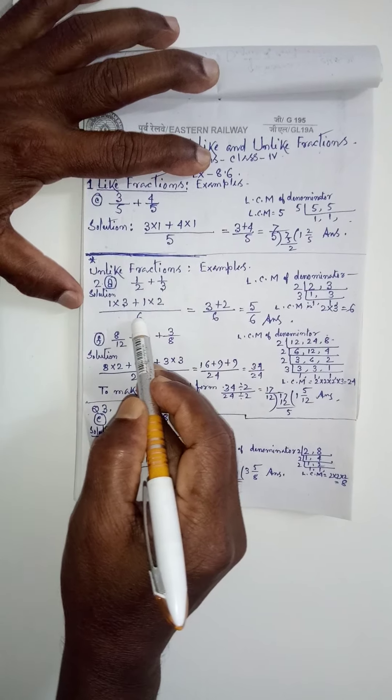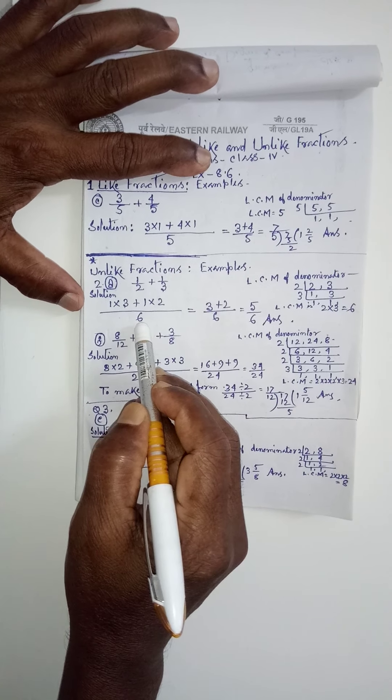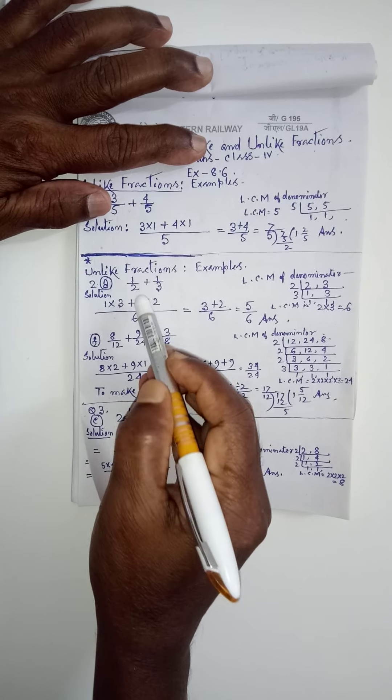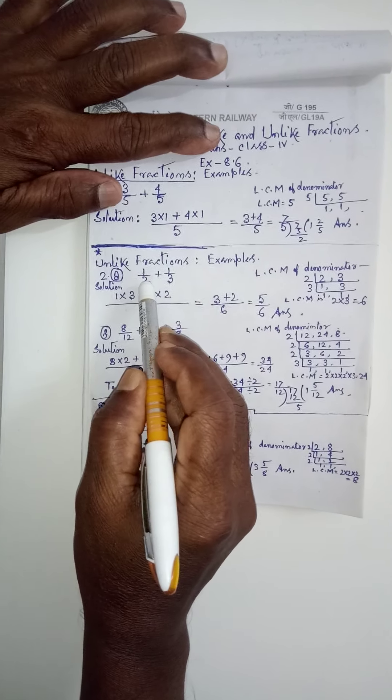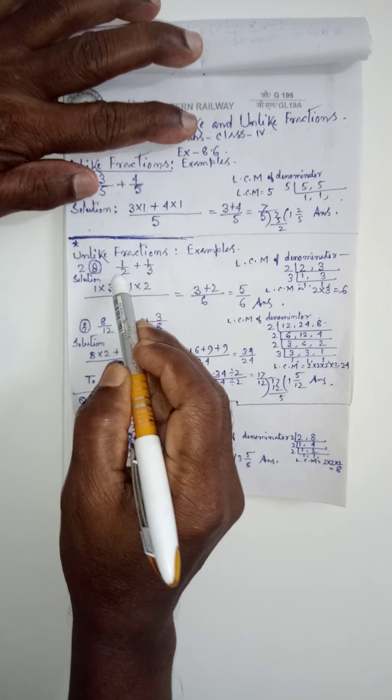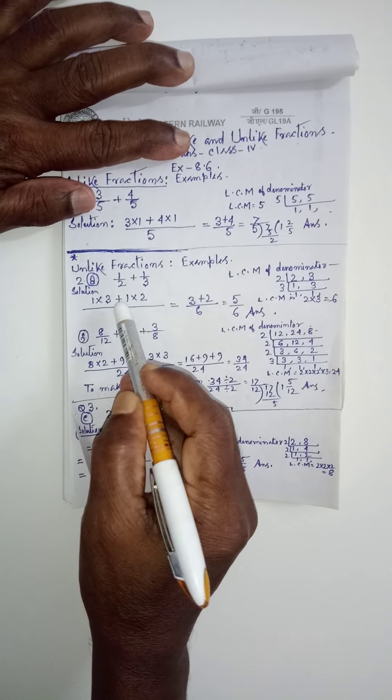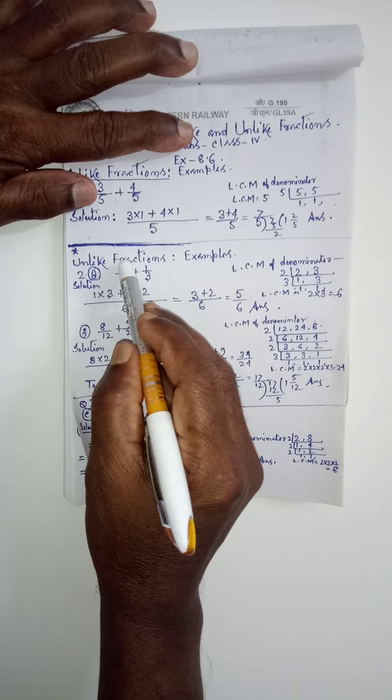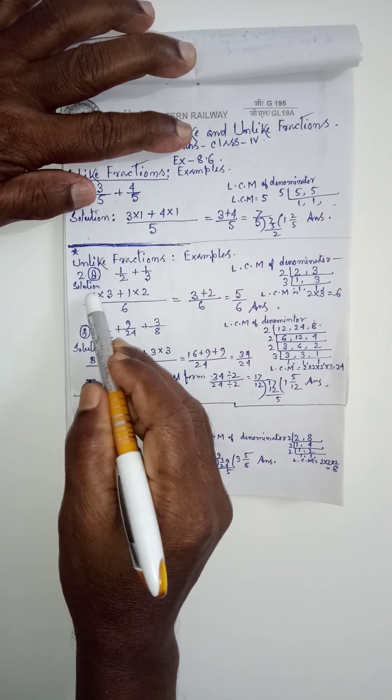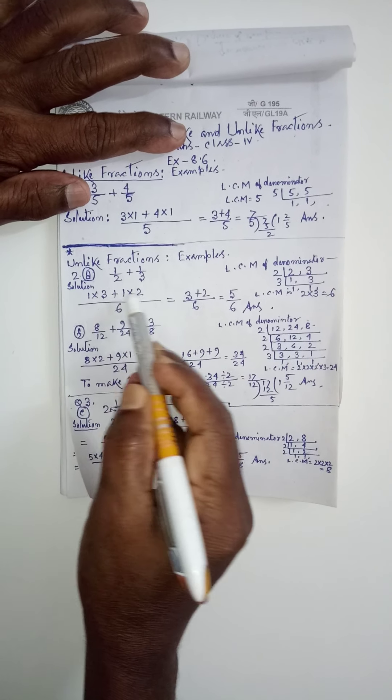6, I have written it under didda line. This 6 ko divide karna hai, 2 say, matlab, it is the denominator. 2 say, 6 ko divide karna hai, 3 milta hai. 3 ko multiply karna hai, numerator ko. 1 is the numerator, 1 into 3, plus.